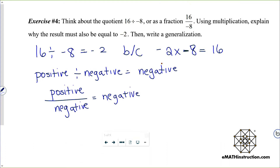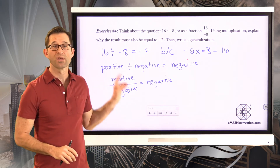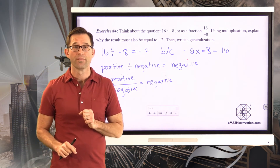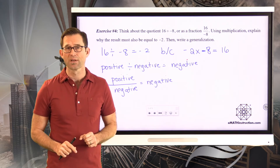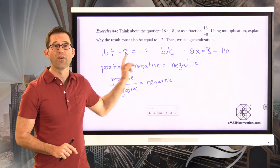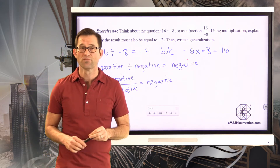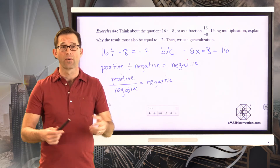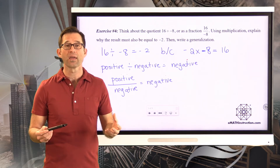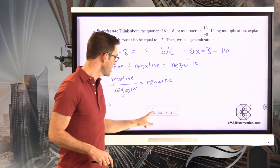We can generalize: a positive divided by a negative gives a negative result. In the previous exercise, a negative divided by a positive was a negative. In this exercise, a positive divided by a negative is also a negative. In our last pattern-forming exercise, we're going to look at what we get when we have a negative divided by a negative.